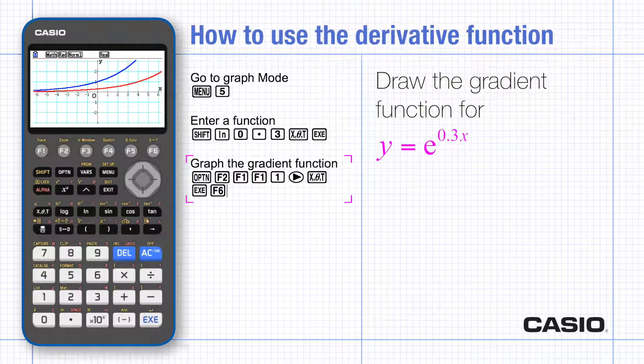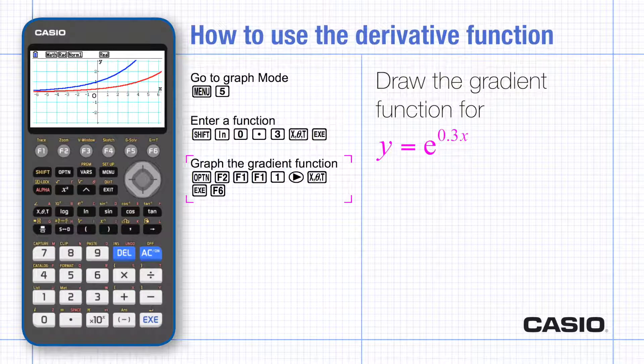The graph suggests that the gradient function is a simple transformation of the original function and therefore the gradient might be y equals 0.3 e to the 0.3 x.